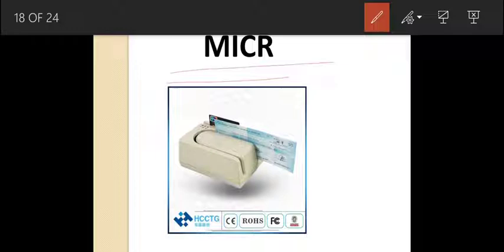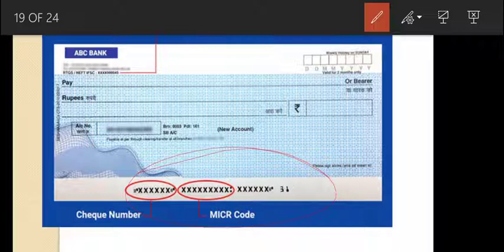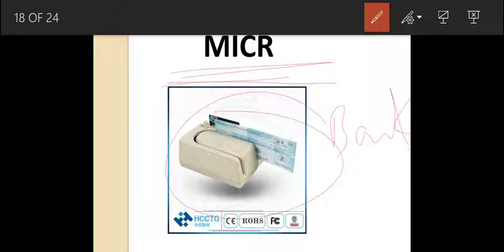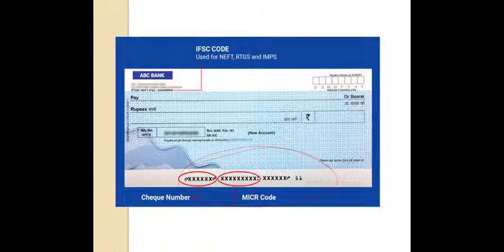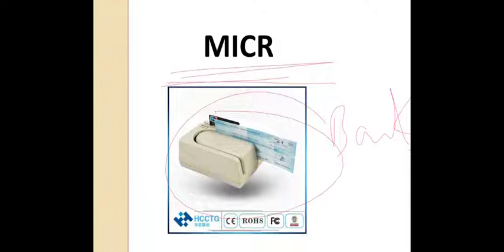MICR stands for Magnetic Ink Character Reader. This device is specially used in banks. Cheques have some text written in special magnetic ink. The MICR device is used to recognize that text and converts the magnetic information into characters. So the MICR device reads the magnetic ink on the cheque and converts it into readable characters.